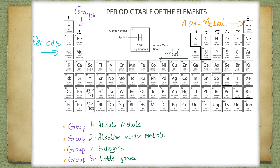Anything to the left of the ladder is a metal, and any element to the right of the ladder is a non-metal. Hydrogen is a non-metal. It is sometimes placed in Group 1 as it only contains one electron. Different periodic tables will place Hydrogen in different sides of the ladder.